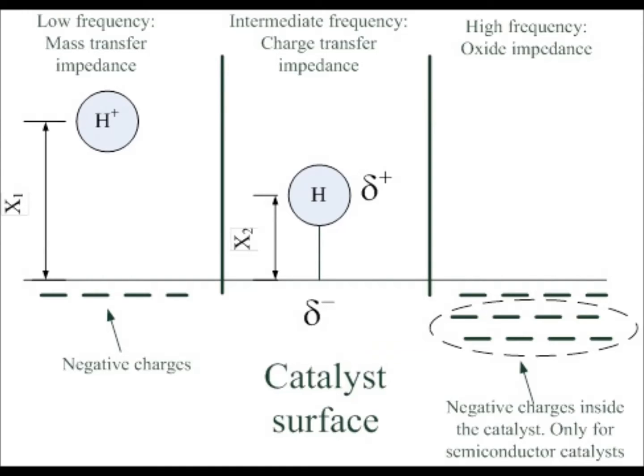At intermediate wave frequencies, the charge transfer phenomena manifests. At high frequencies, the motion of electrons is detected. This only happens for the case where the cathode is a semiconductor.